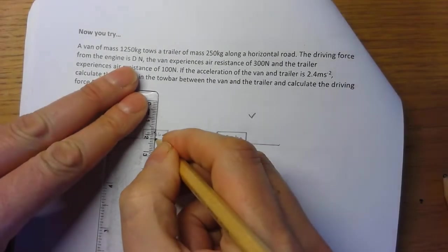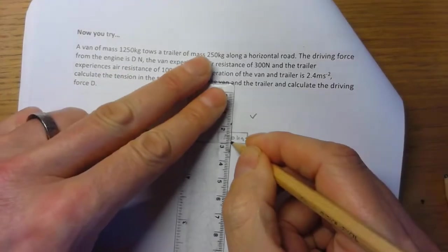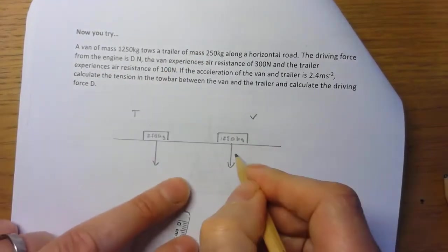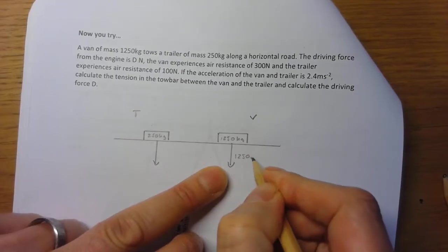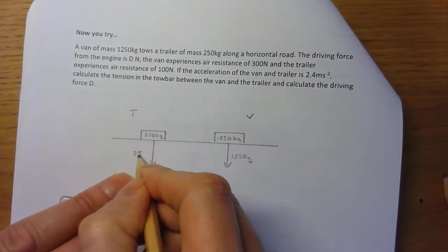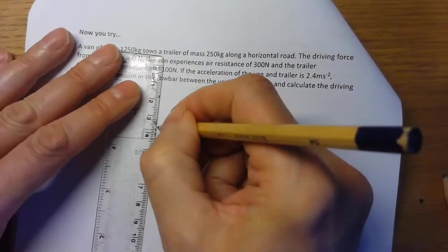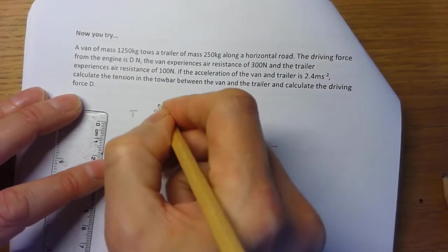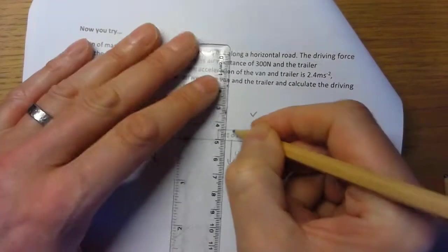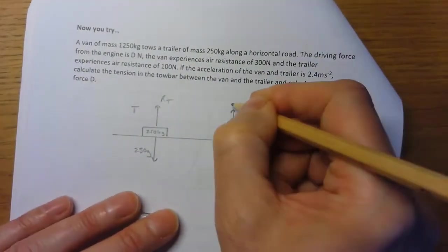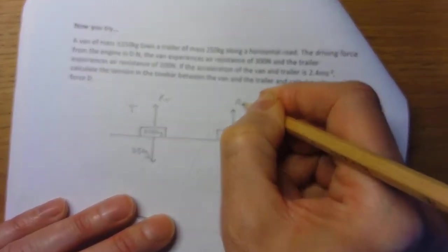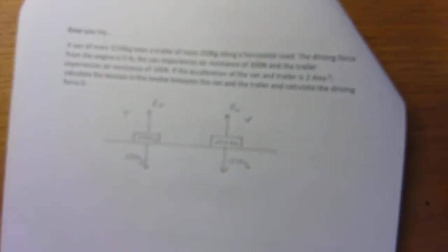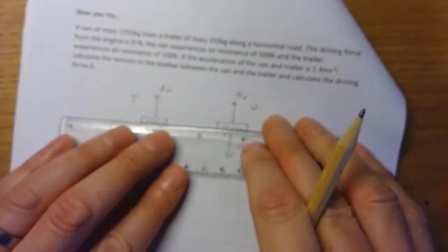So I have a force acting down on each: 1250g and 250g. There's no other forces acting up or down, so I've got normal reaction on T and normal reaction on V. Always a good idea getting all the forces in, regardless of whether you're going to use them.